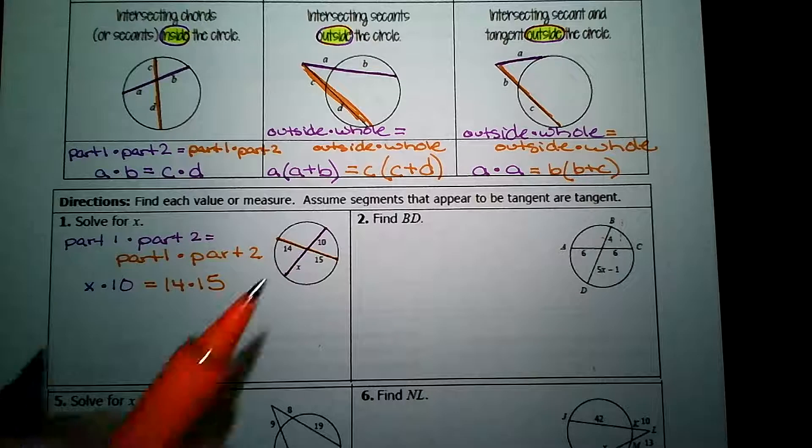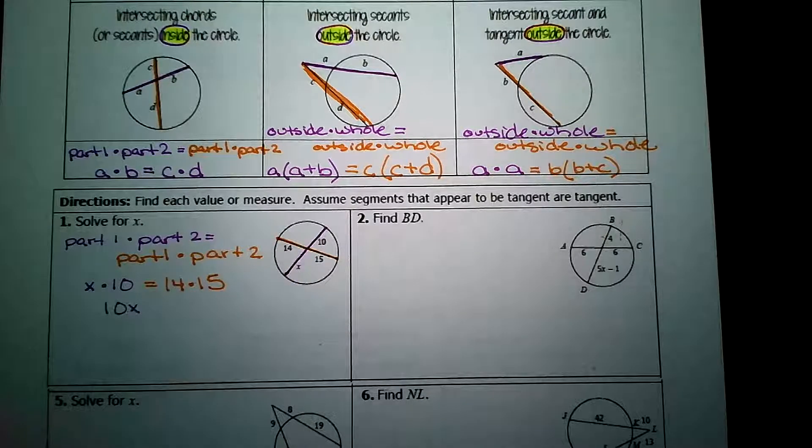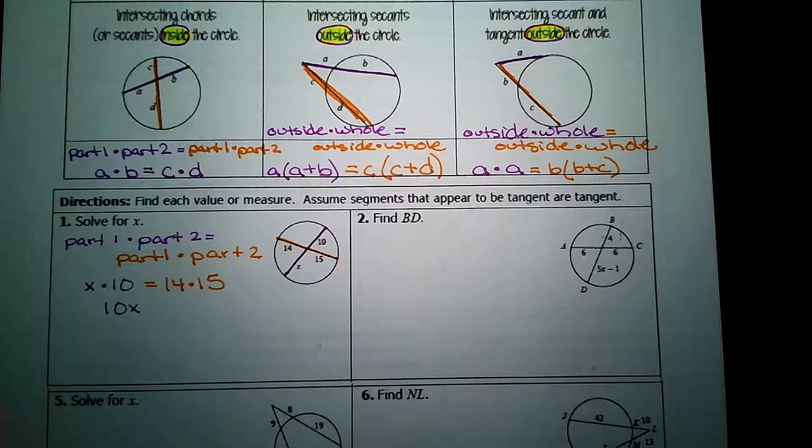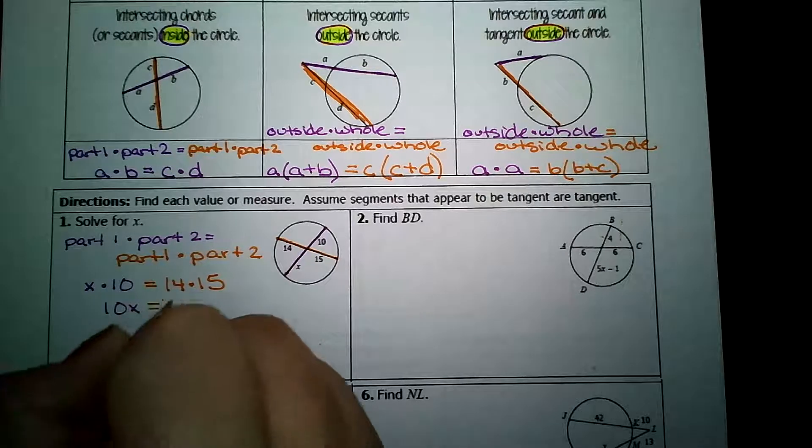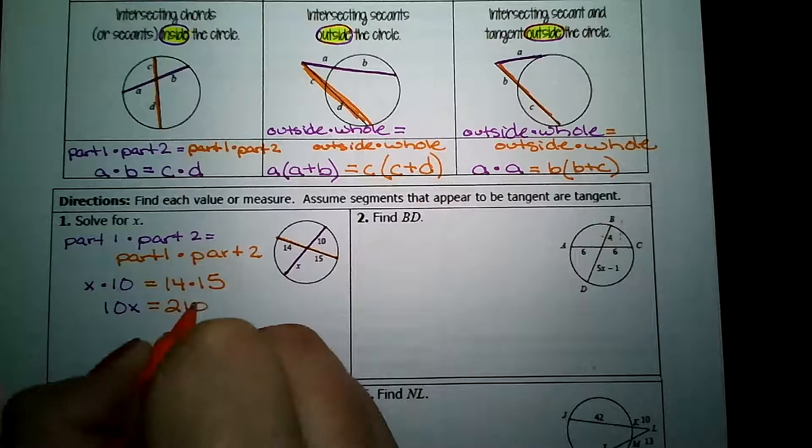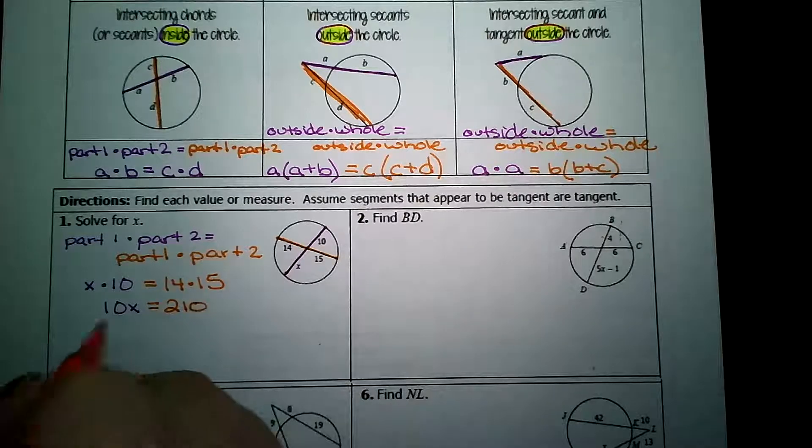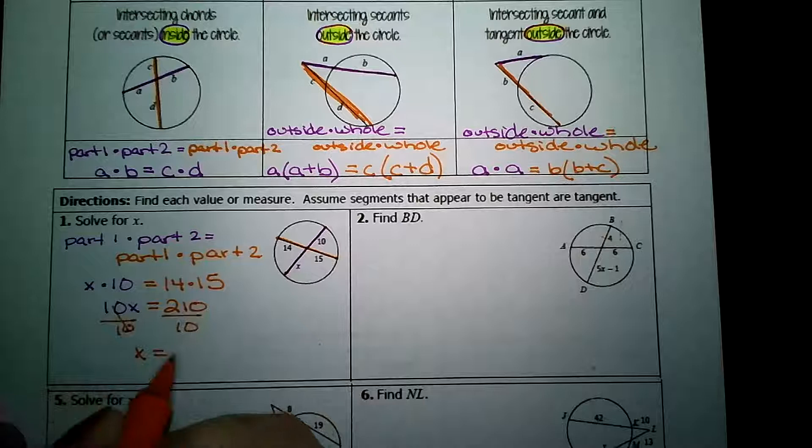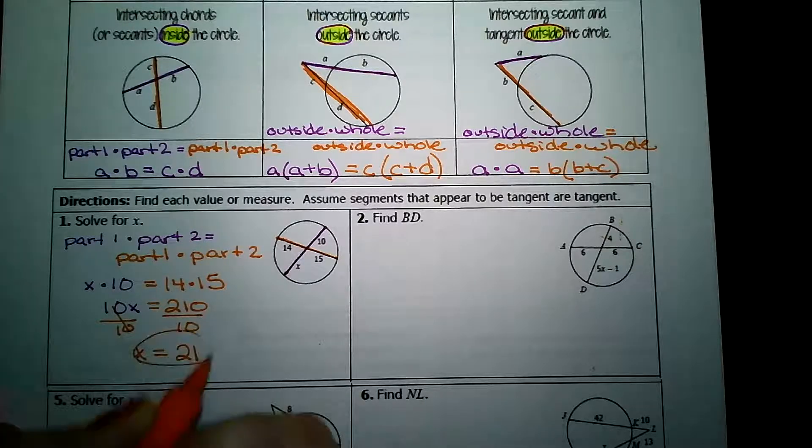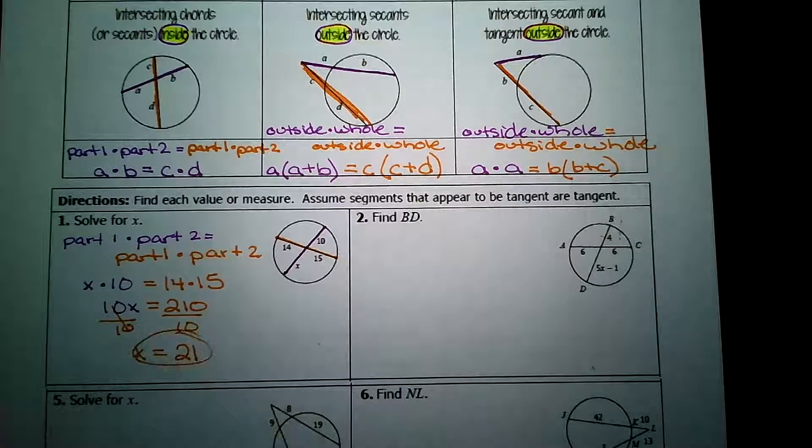x times 10 is 10x. 14 times 15 is 210. And now I can finish solving. Divide both sides by 10. 210 divided by 10 is 21.